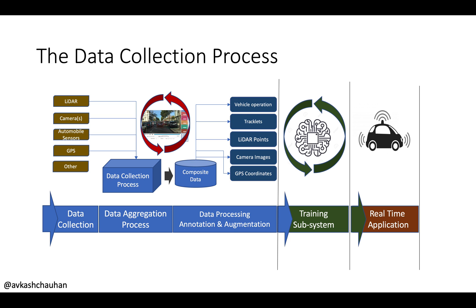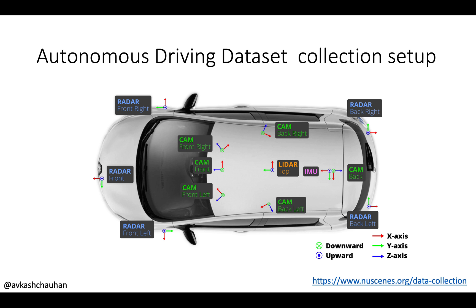Once the data is available, a training subsystem is kicked in to learn from data and build machine learning models. Those models are then used in real-time applications to make decisions, which are applied to the car sensors and other infrastructure. Here is an example of how a company sets up their car to collect this dataset — you can follow the link to learn more.